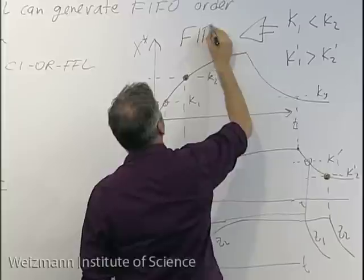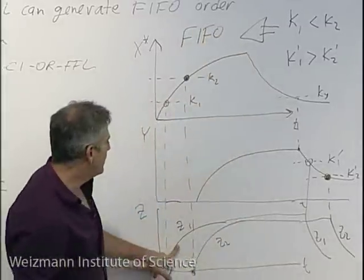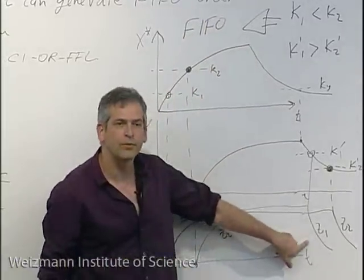If K1 is smaller than K2 for X, but K-prime-1 is larger than K-prime-2 for Y — thresholds in opposite order for Y versus X — then Z2 cares about a smaller K-prime than Z1. The result is FIFO order: the first gene turned on is the first gene turned off. The feedforward loop is designed this way in the flagella system — that's how evolution has tuned those numbers.